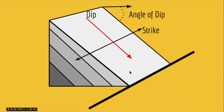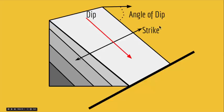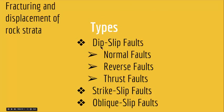If you have a fault in which movement is primarily parallel to the inclination, that is a dip-slip fault. But if the fault movement is horizontal, that is called a strike-slip fault. So we have dip-slip faults — movement parallel to the dip — strike-slip faults with horizontal movement, and oblique-slip faults.